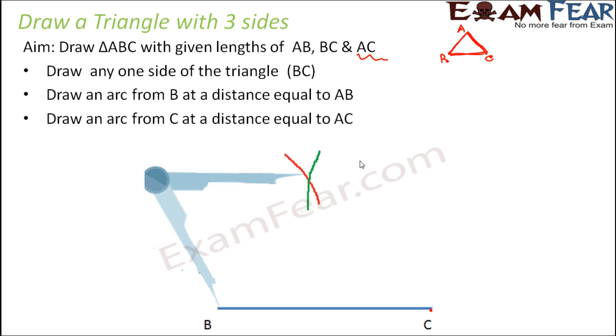In a similar way, you draw an arc from point B at a distance equal to AB. Let us say if AB is 2 cm, you measure 2 cm on a ruler. You adjust the opening of the compass up to 2 cm and then you draw an arc. Perfect.